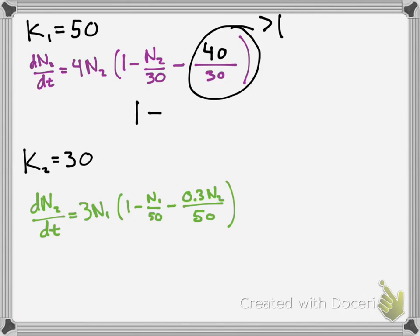notice how this is greater than 1. So if you're subtracting a number that's greater than 1 from a number that would be less than 1, so if you had, say, 1, for example, minus, I guess, 4 thirds, you'd get a negative number, right? So what does that negative number represent? That means if this is negative, then the species two will decline towards extinction.